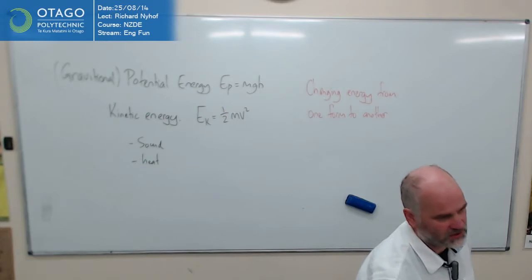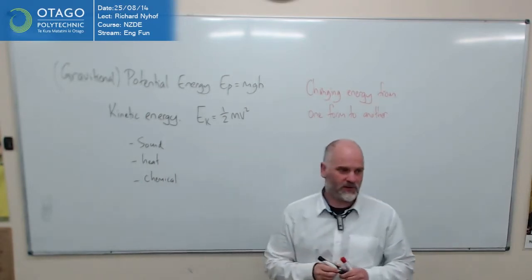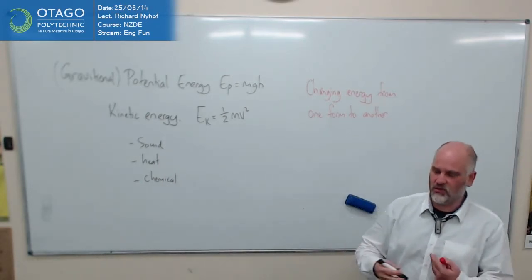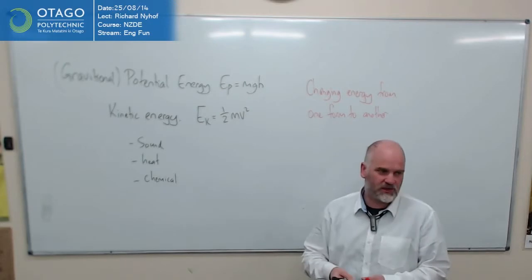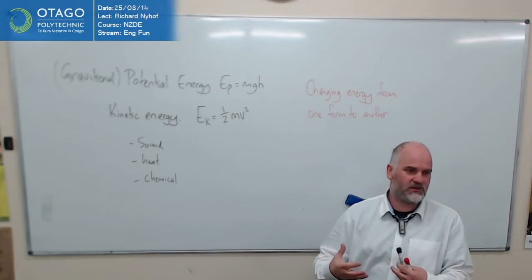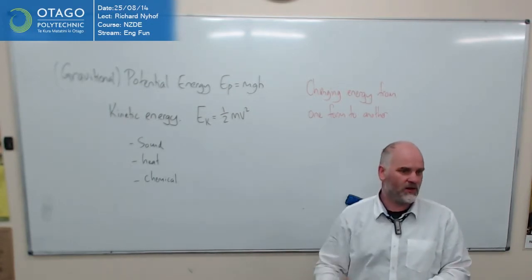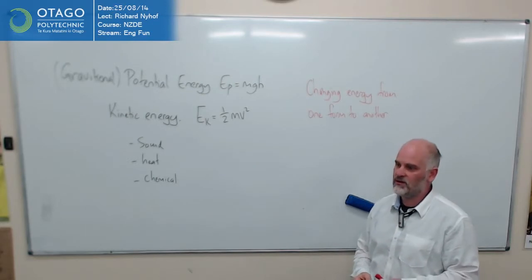Chemical energy. Okay, so in whatever it was I had for breakfast this morning, porridge or whatever it was, there was chemicals, and those chemicals had certain bonds and things in them, and that's gone into me, and I've broken those bonds in my body and released energy, which I've stored in my muscles, and then I've been able to use it. So it's a form of chemical energy. That's exactly what it is.